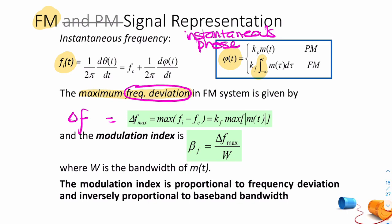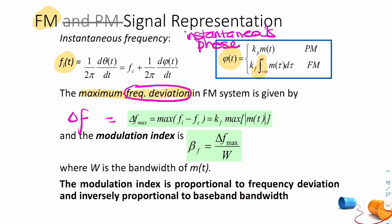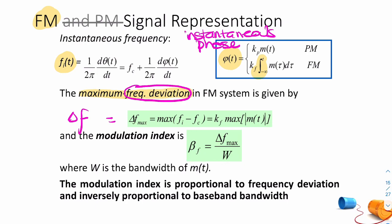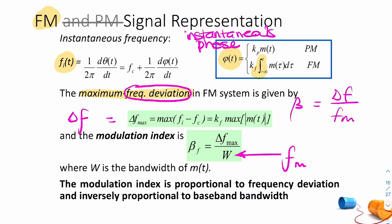Just like in amplitude modulation we have the modulation index or depth of modulation, here too we have a modulation index — but it's modulation in frequency. For AM the modulation index was a ratio of amplitudes using E-max and E-min. For FM, the modulation index beta is a ratio of frequencies — it's unitless — defined as delta-f over fm, where delta-f is the maximum frequency deviation and fm is the baseband bandwidth. So beta equals delta-f over fm. The modulation index is proportional to frequency deviation and inversely proportional to baseband bandwidth.